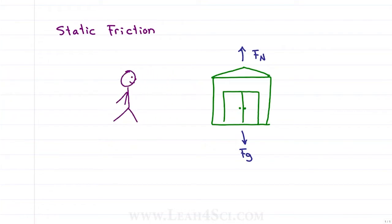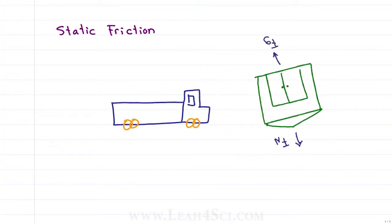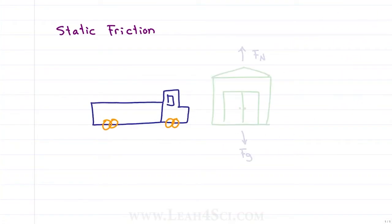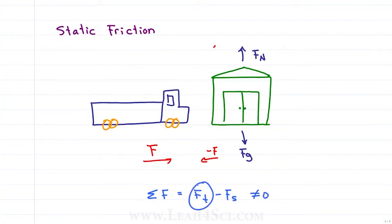Say you apply even more force and body slam the shed. You applied a much greater force in the positive x direction but the shed countered with an exactly equal force in the negative x direction — it's not moving. Until a monster truck comes along and slams into your shed. The truck applies such a big force in the positive x direction that the shed cannot exert a big enough force in the negative x direction. The sum of the forces — force of the truck minus the force of the shed — does not equal zero. Static friction is overcome and the shed goes flying.